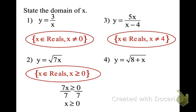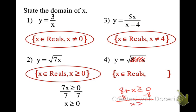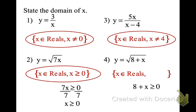Setting it greater than or equal to 0 — this whole thing underneath has to be bigger than 0. So I'm doing 8 + x ≥ 0, subtract 8, so x has to be greater than or equal to -8. Meaning if x is -7, I end up with a 1 in there; if x is -6, I get a 2 — that makes it a real number. I just can't have a negative overall value under the radical.